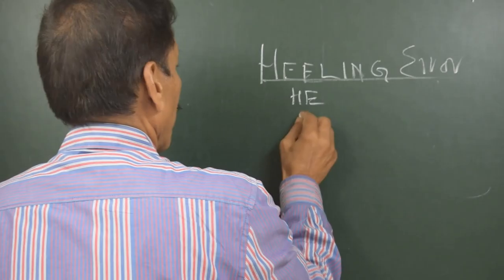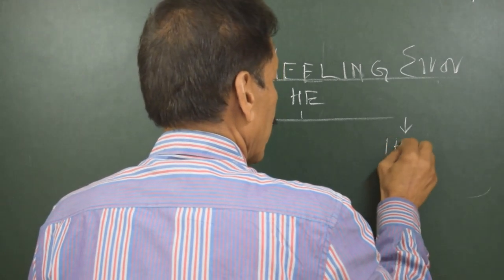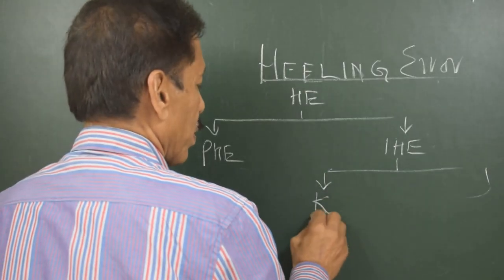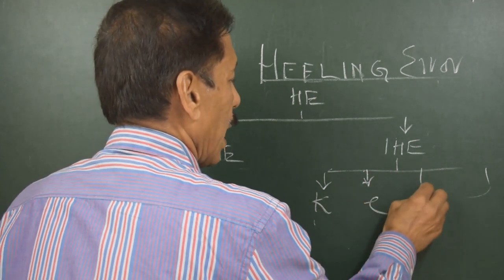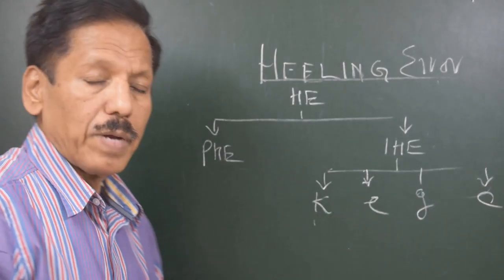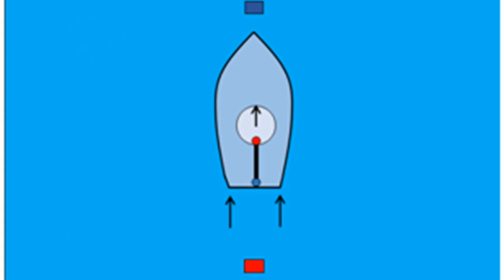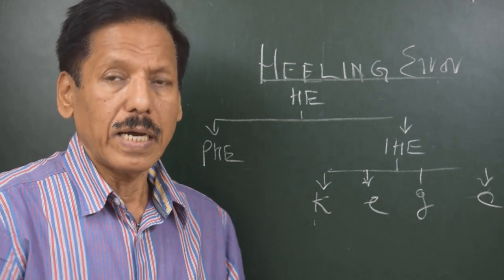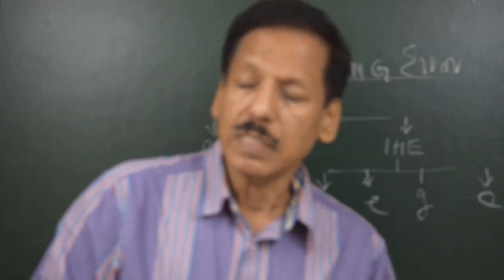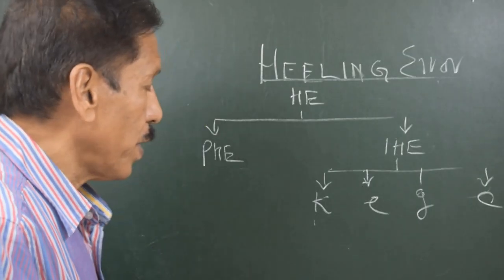We can broadly divide heeling error into permanent heeling error and induced heeling error. Induced heeling error can be due to different rods — the most common being the K rod, then E rod, G rod, and C rod. The K rod can be understood as a pillar vertically below the magnetic compass. The E rod is a beam below the compass, generally giving coefficient D. The G rod is a fore-and-aft girder terminating below the compass, and the C rod is a vertical soft iron such as a funnel or centerline mast.